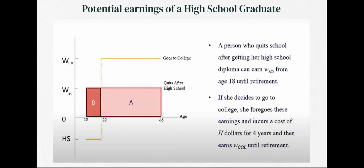Here we can see an illustration of potential earnings. In scenario A, a person who quits school after getting her high school diploma can earn a wage represented by HS from age 18 until retirement. Or, if that person decides to go to college, he or she forgoes earnings and incurs a cost of H dollars for four years, then earns a college wage until retirement. The person has two options: work after high school, with lifetime earnings at the HS wage rate, or go to college for much higher earnings — but sacrificing years of salary and paying direct costs.